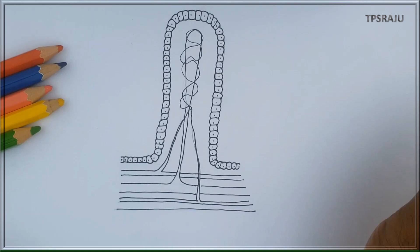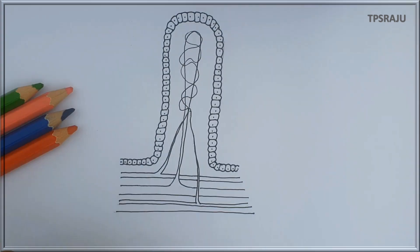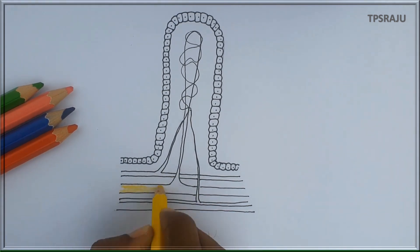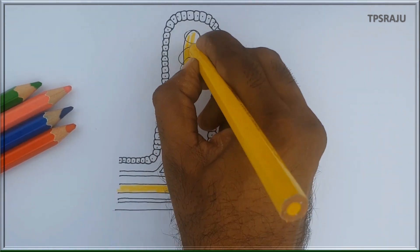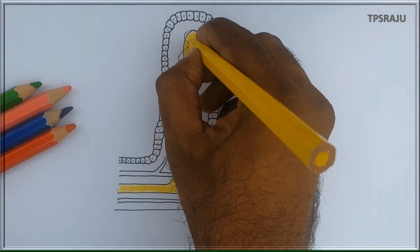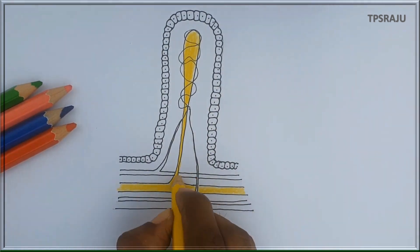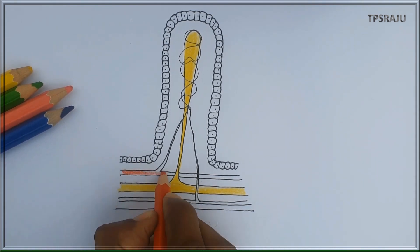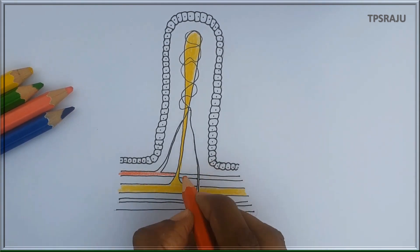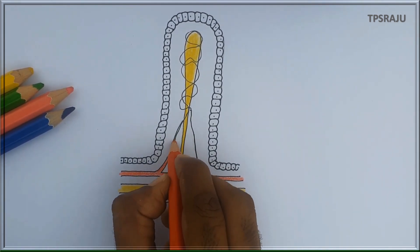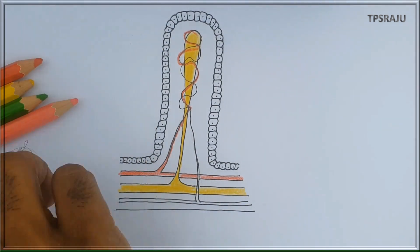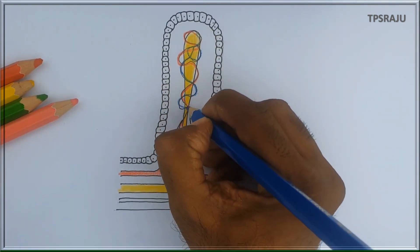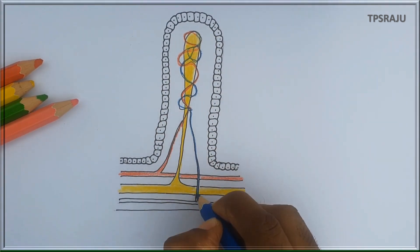Let us apply the colors. We are applying yellow color to lymph vessel and lactiole. Red color to artery and capillaries. Blue color to capillaries and vein.